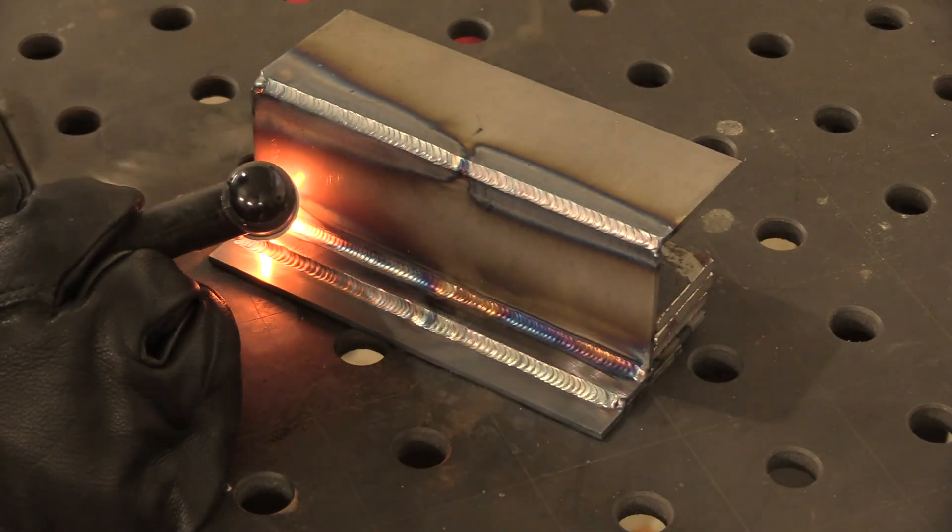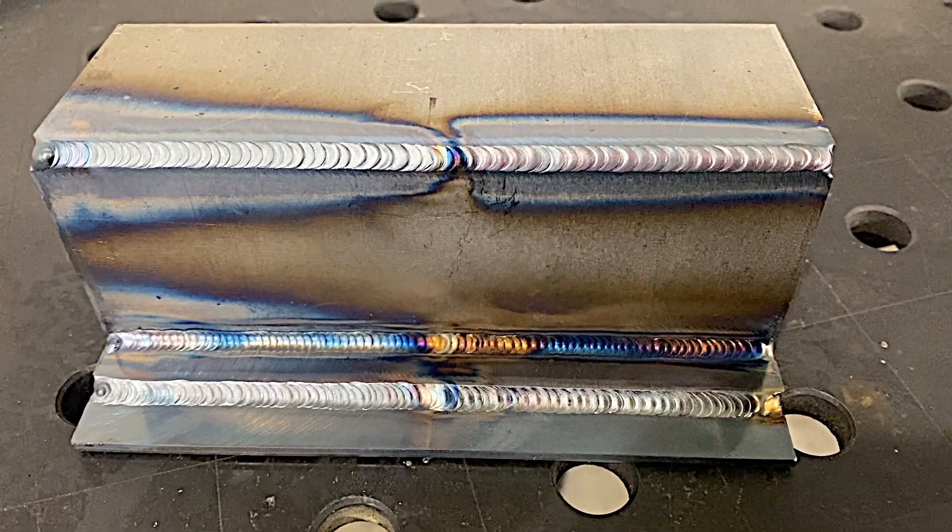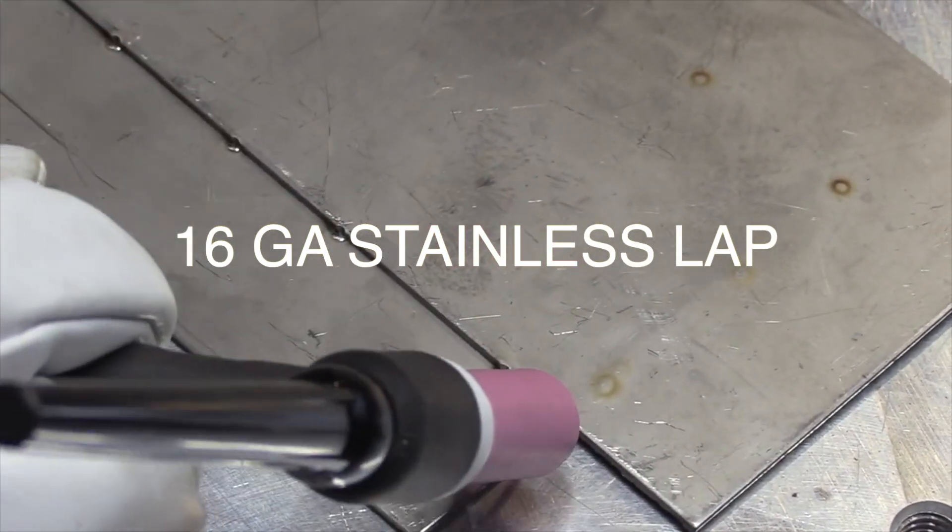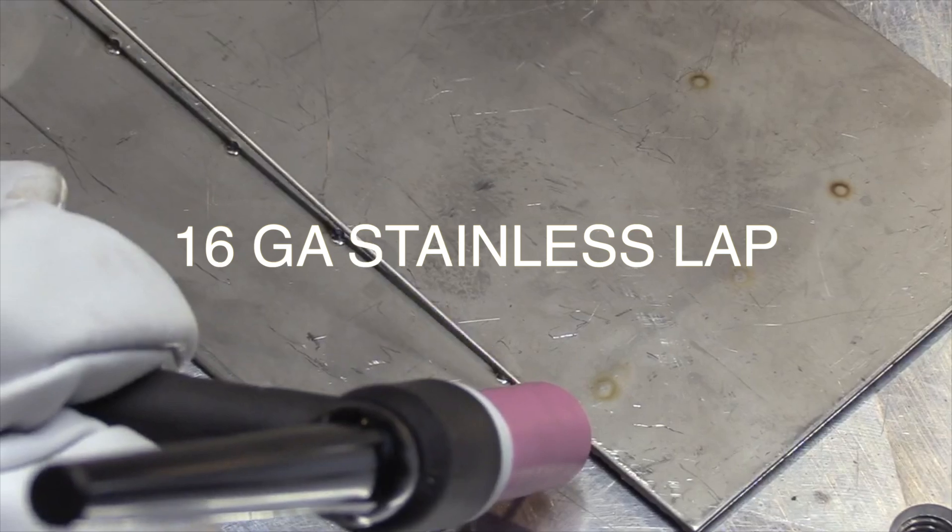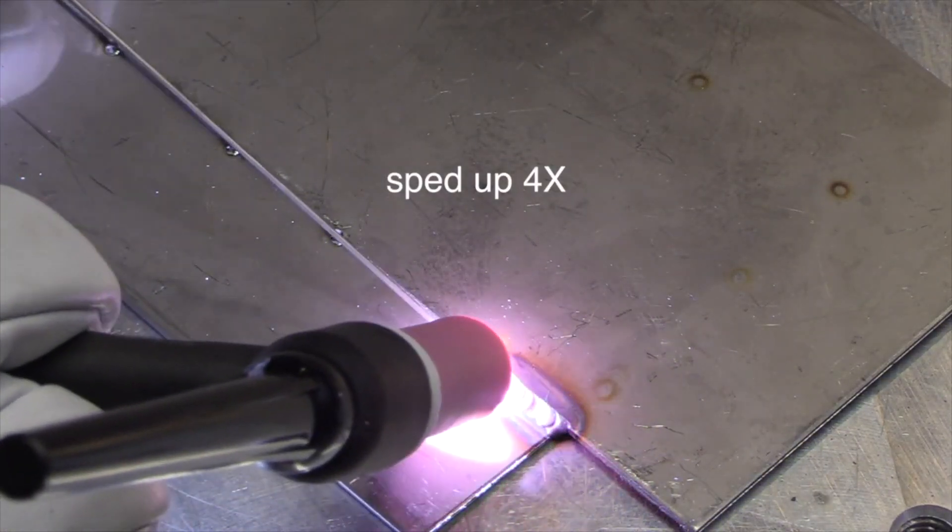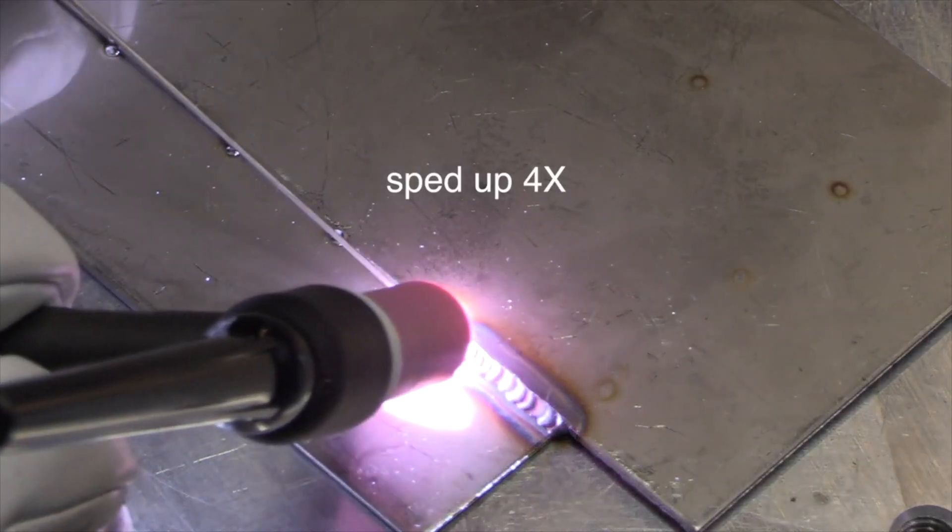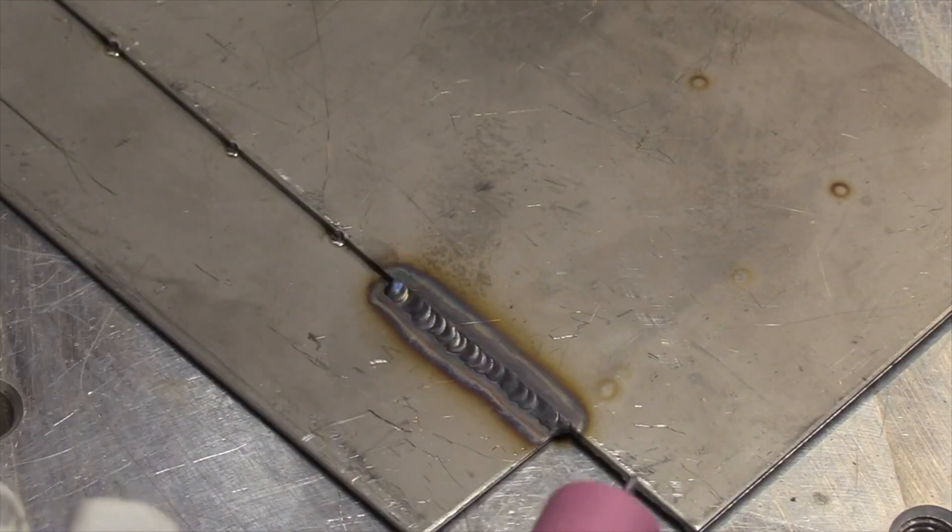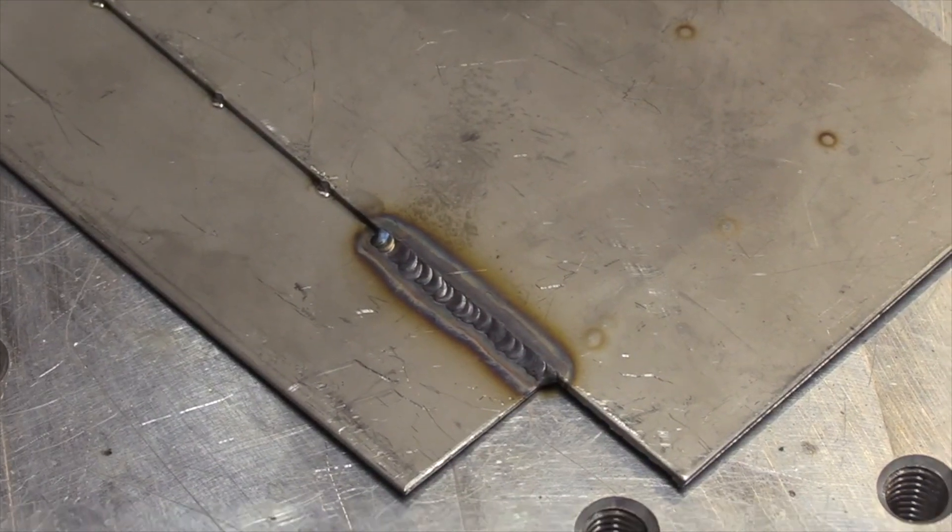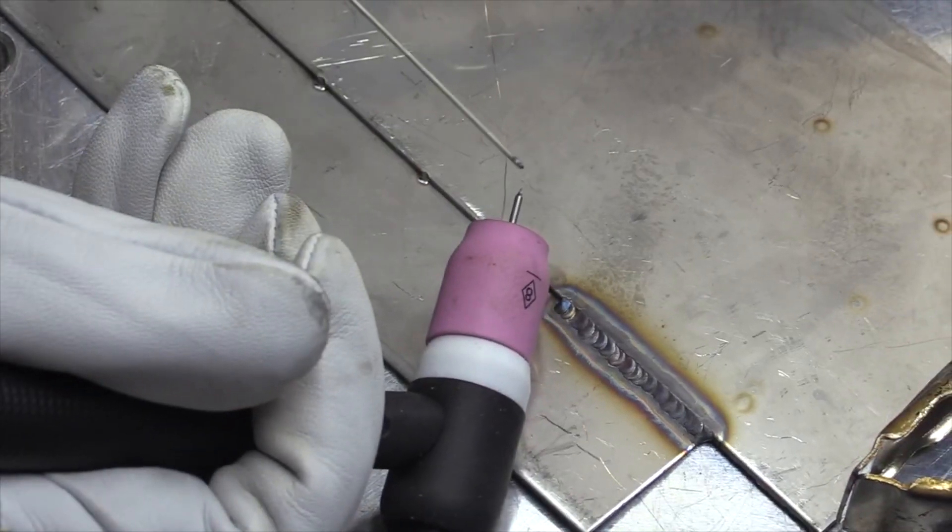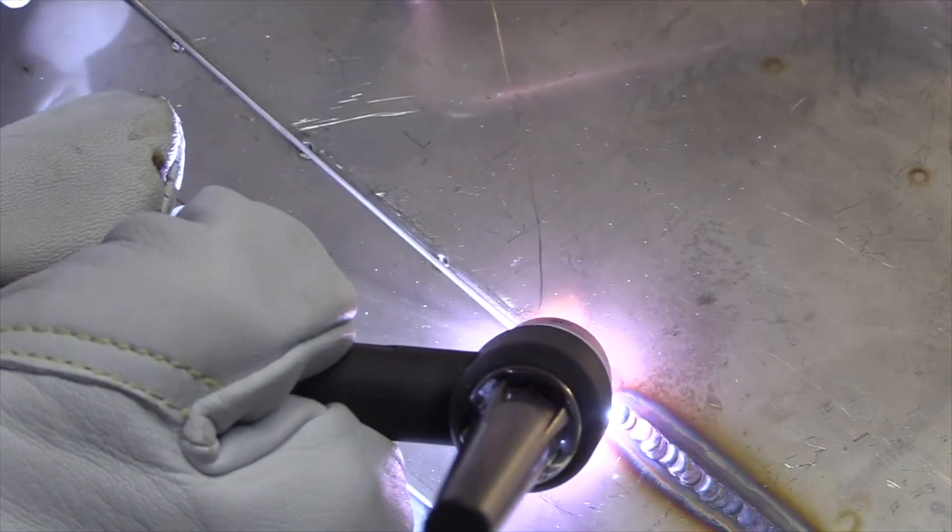This is a standard number eight cup, standard collet body that comes with most air-cooled 17 style torches, the most common torch out there that comes with say a 200 amp machine. This is sped up four times, but I'm just showing you with a seven sixteenths stick out at 20 CFH, results are less than perfect. It's gray, the puddle swam around on me, got oxidized.